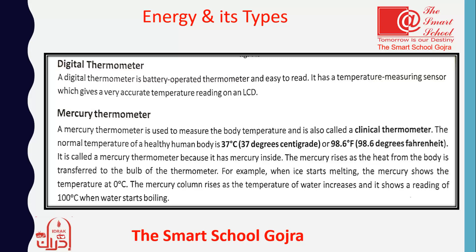For example, when the ice starts melting, the mercury shows the temperature at 0 degree Celsius. Jab ice jo hai woh melt hoti hai, to mercury jo hai woh apna temperature 0 show karta hai. The mercury column rises as the temperature of water increases — jaisi jaisi water ka temperature increase hota hai, to mercury ka column bhi rise hona shuru ho jata hai, upar ki taraf. And it shows a reading of 100 degree Celsius when water starts boiling.